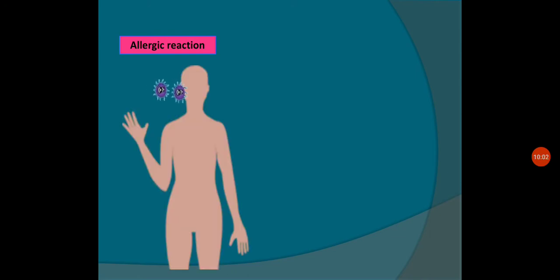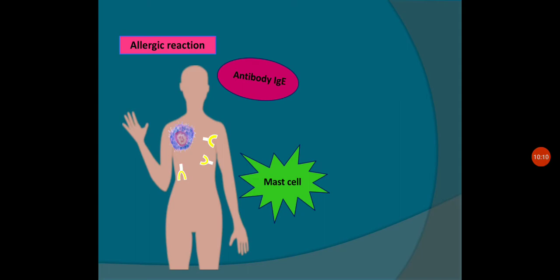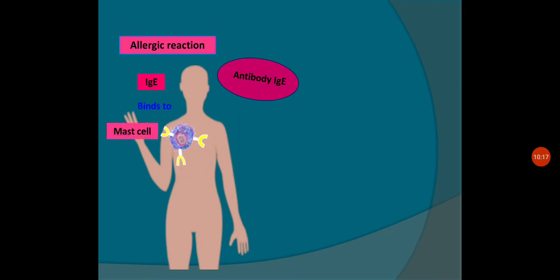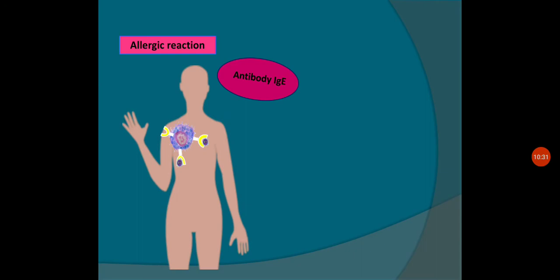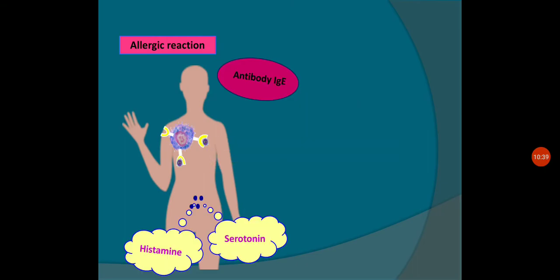In allergic reactions, when allergens enter our system, IgE antibody is produced by the immune system, and mast cells produce components that bind with the allergen. When the allergen binds with the IgE antibody, it produces two chemical components — histamines and serotonins. Histamines and serotonins are secreted by the mast cells as an allergic response in our body.